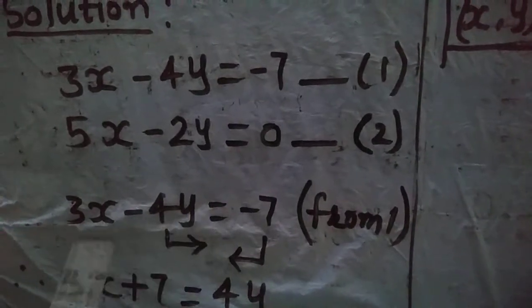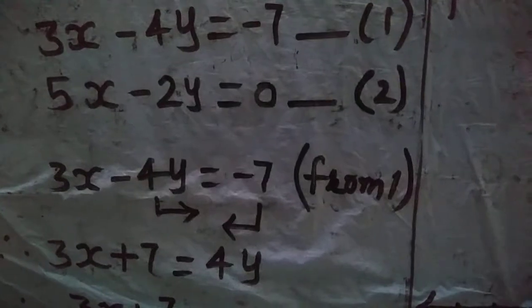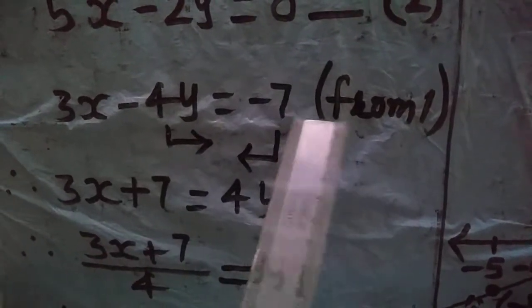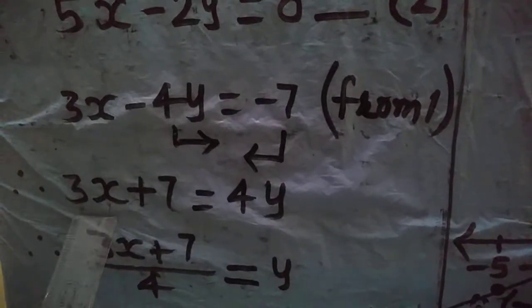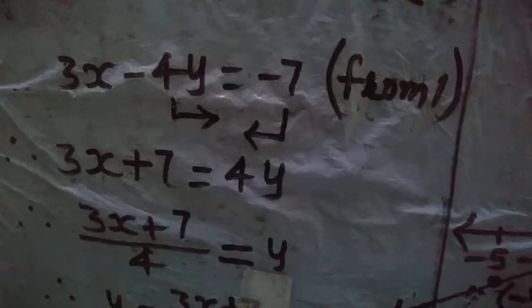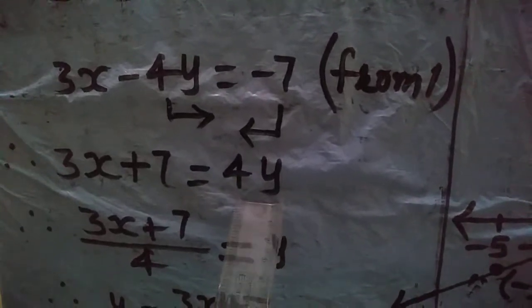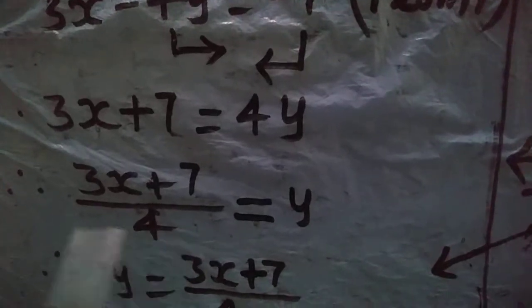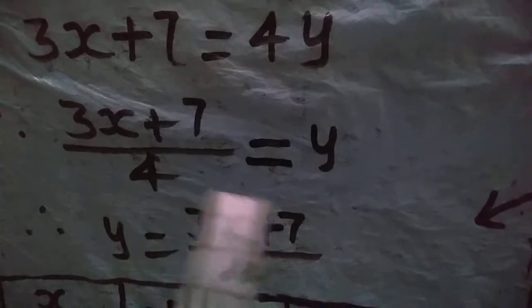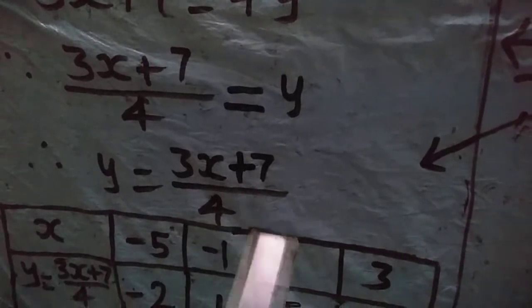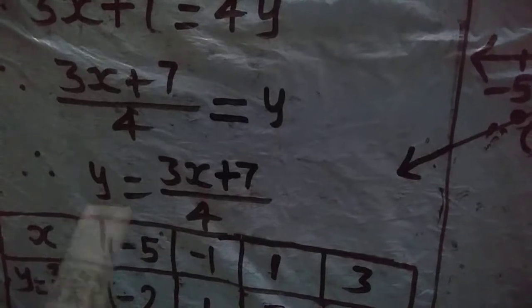From Equation 1, we convert it into the form of y. We transfer -4y to the right-hand side and -7 to the left-hand side, giving us 3x + 7 = 4y. Then, dividing both sides by 4, we get y = (3x + 7) / 4. This completes the first step for Equation 1.